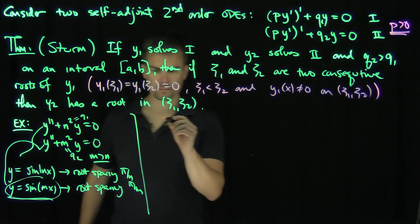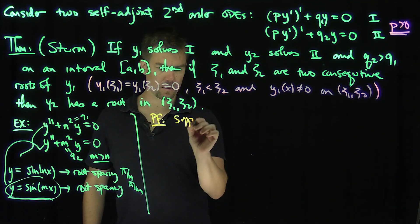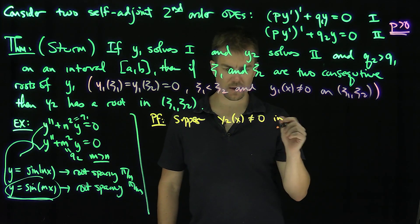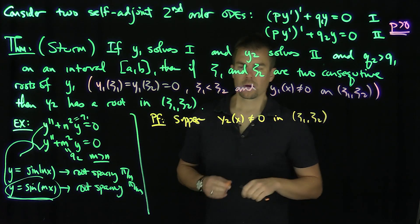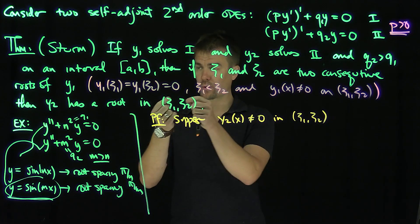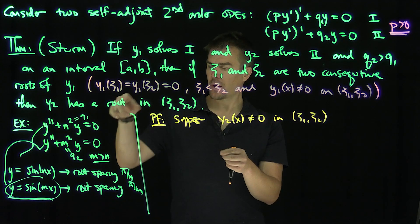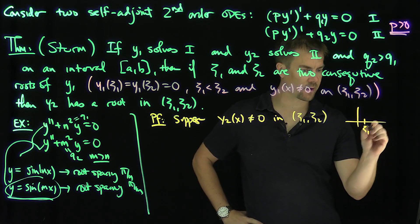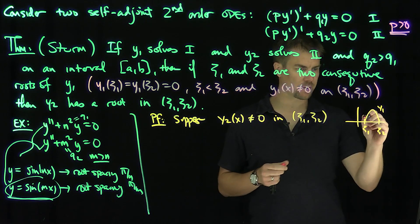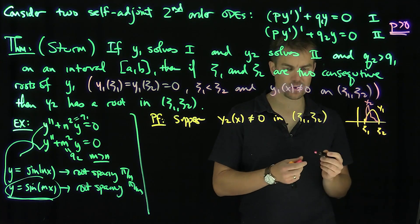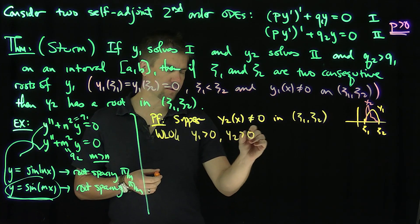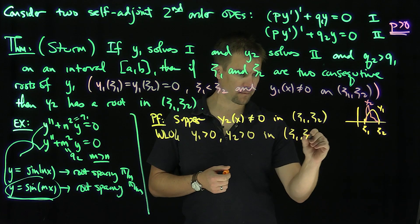For the proof, suppose y2(x) ≠ 0 on the interval (ζ1, ζ2). Without loss of generality, since y1's zeros at ζ1 and ζ2 are simple zeros (by the fact that the Wronskian can't vanish in between), we can assume that y1 is strictly greater than zero and y2 is strictly greater than zero on (ζ1, ζ2).